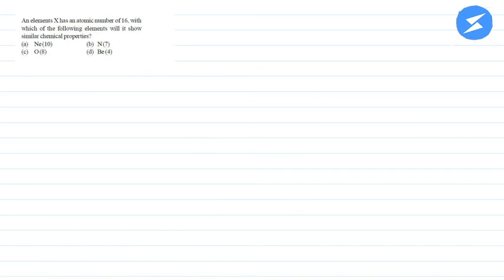Hi, I am your teacher for this question and the question is: an element X has atomic number 16, with which of the following elements will it show similar chemical property? Neon, nitrogen, oxygen, or beryllium.